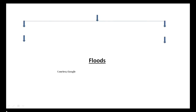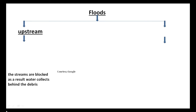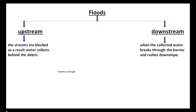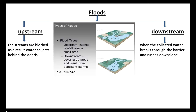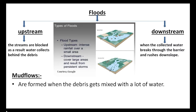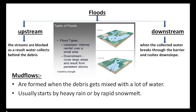Debris can block streams, causing floods. When streams are blocked, water collects behind the debris; when the collected water breaks through the barrier and rushes downslope, this causes downstream floods. Mud flows are formed when debris gets mixed with a lot of water, and usually start by heavy rainfall or rapid snowmelt.